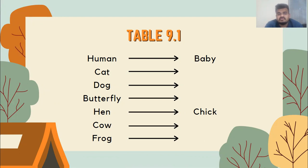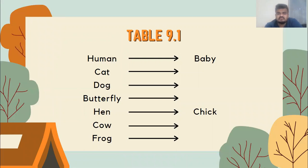The table gives two examples already filled in — human and hen. For humans, the young one is called a baby, and for the hen it is a chick. But what are the young ones of the other animals listed? Watch the video for a while and write down the young ones for animals 2, 3, 4, 6, and 7, since entries for 1 and 5 are already given.